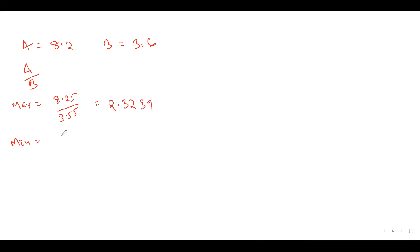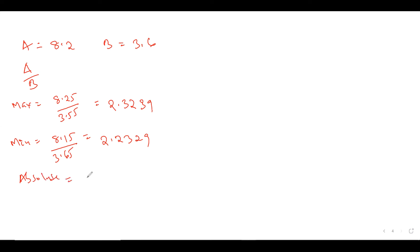Minimum of the same operation: in division, you take the minimum of the first, which is 8.15, divided by the maximum of the second, which is 3.65. This gives approximately 2.2329. Now, the absolute error for this will be: maximum (2.3239) minus minimum (2.2329), then divide by 2. If you do this, you get an answer of roughly 0.0455.